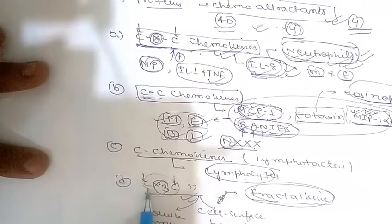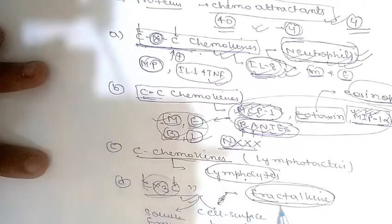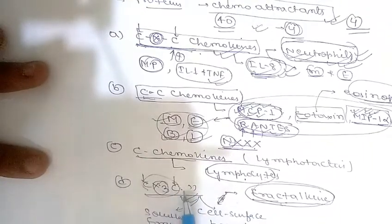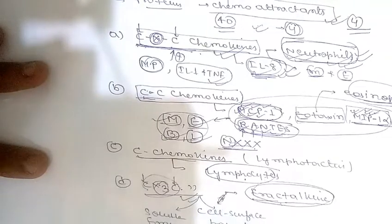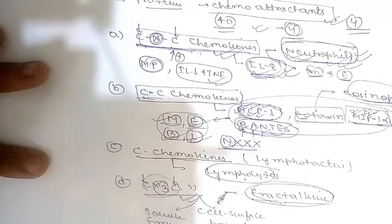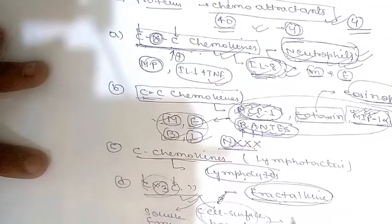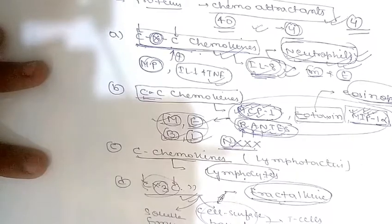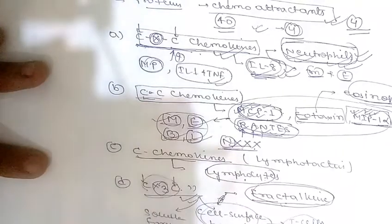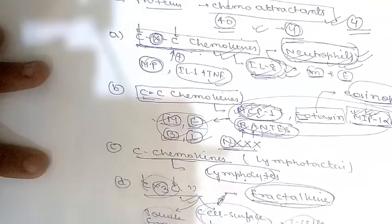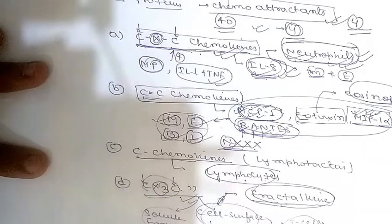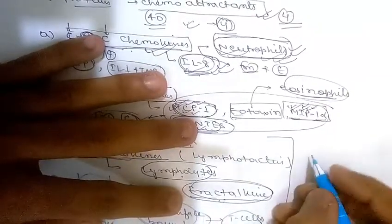The second form of fractalkine is a soluble form, derived by proteolysis of the membrane-bound protein, which has potent chemo-attractant activity for the same cells — monocytes and T cells.